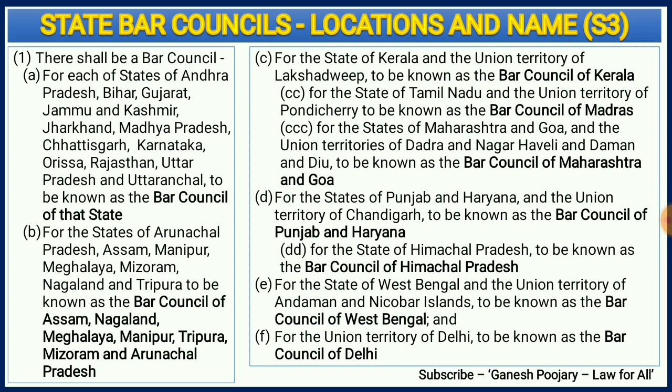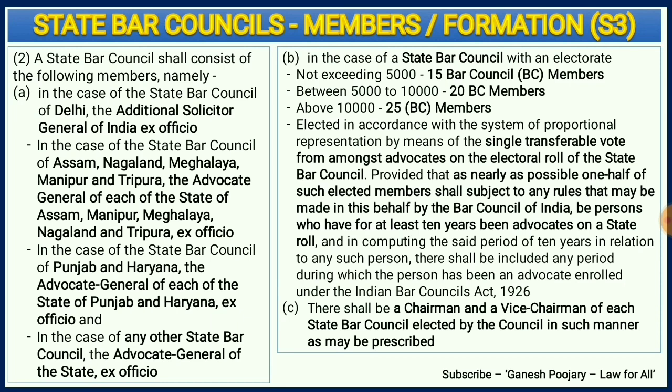Now moving to section 3 subsection 2, which is very important because it discusses about the members and formation. Under section 3(2)(a) we discuss about different states and the external member, who can be the Additional Solicitor General of India ex officio or the Advocate General of the state ex officio. This differs from state to state.